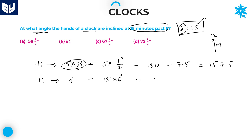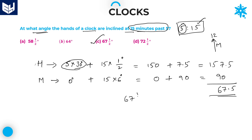The minutes hand total: 0 plus 15 into 6 equals 90 degrees. Subtracting: 157.5 minus 90 equals 67.5 degrees, which is nothing but 67 and a half degrees. Option C is the right answer. You can also write 67.5 as 67½ degrees — both representations are the same. So the answer is Option C.